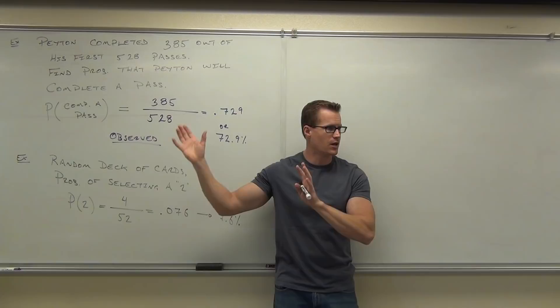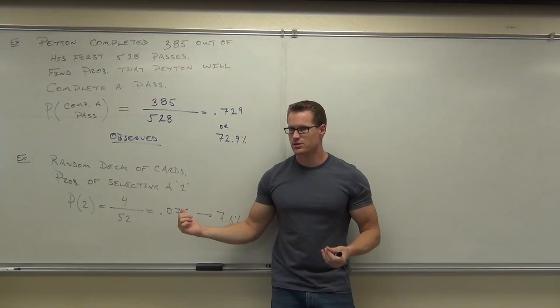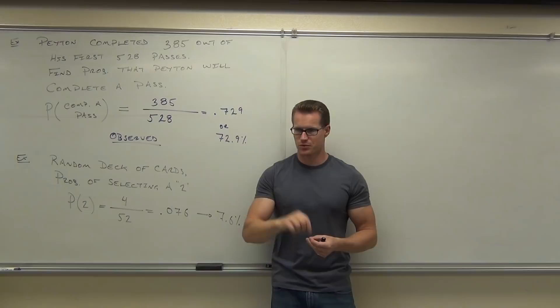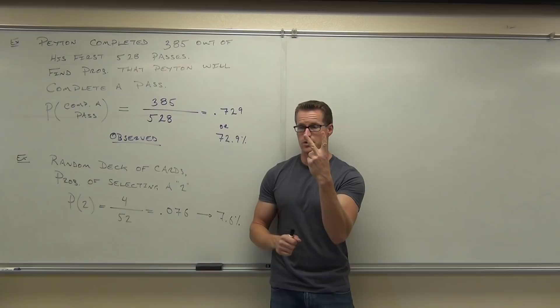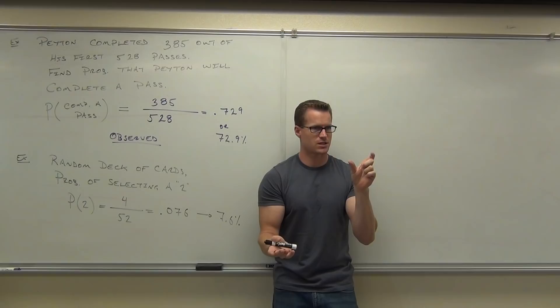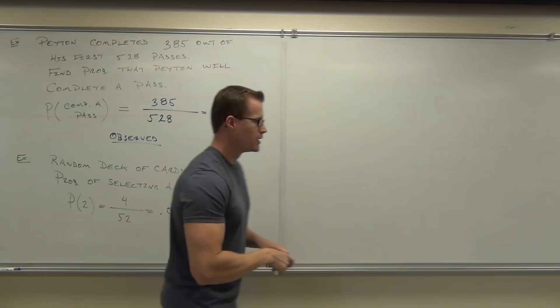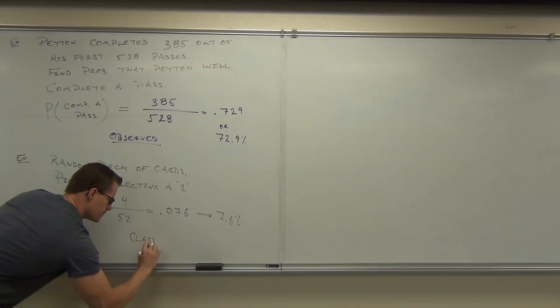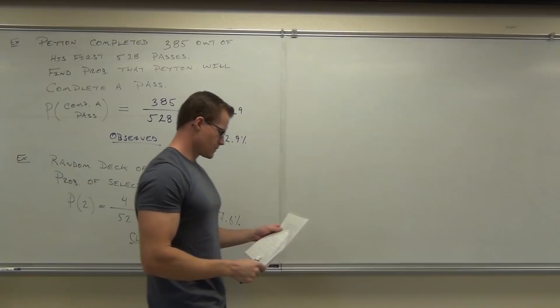Is this classical or observed? It's classical — you didn't actually draw cards from the deck. You just calculated what should happen: how many twos are there divided by how many total cards. You can turn a card example into observed probability if you actually draw cards, record results, and calculate from there. But here, since no procedure was actually performed, this is classical probability.